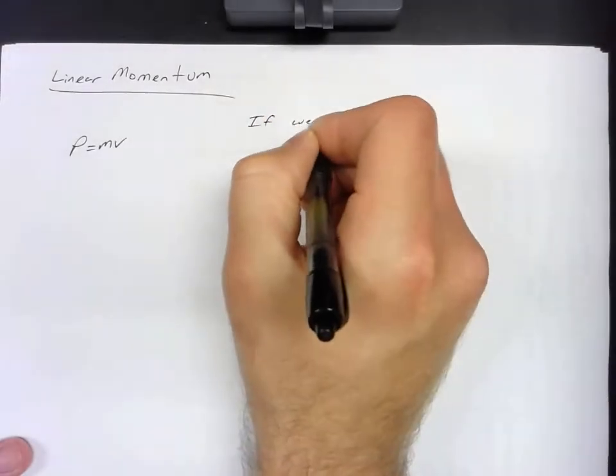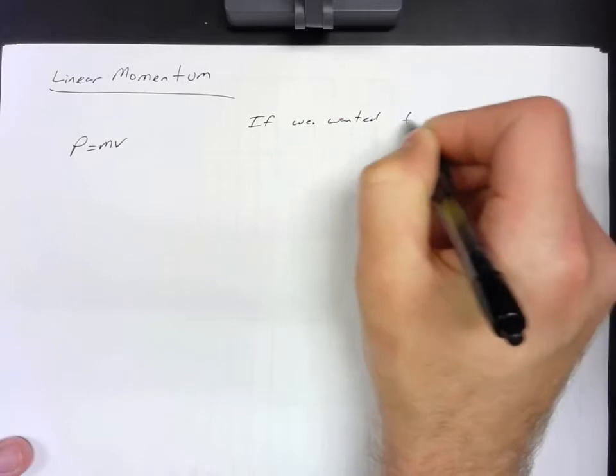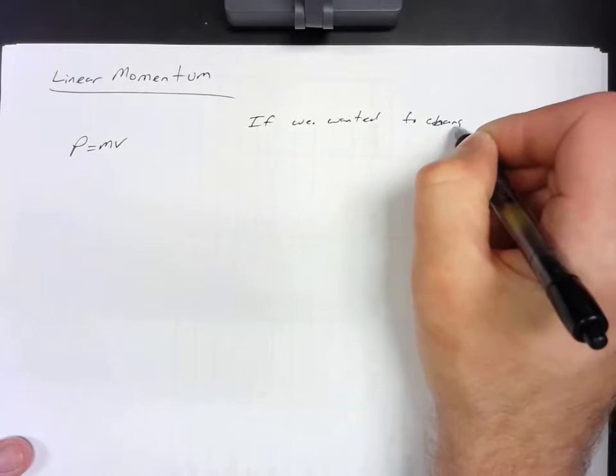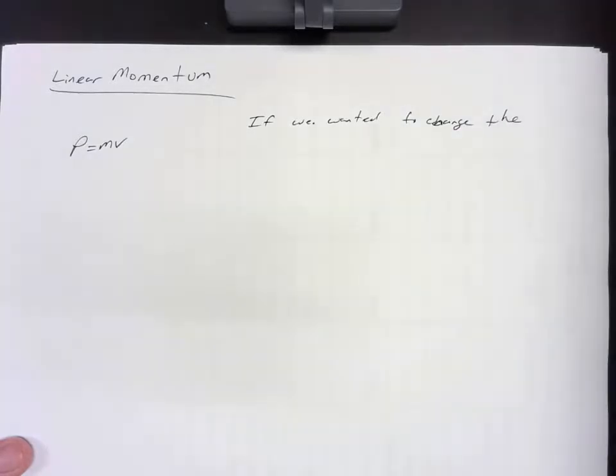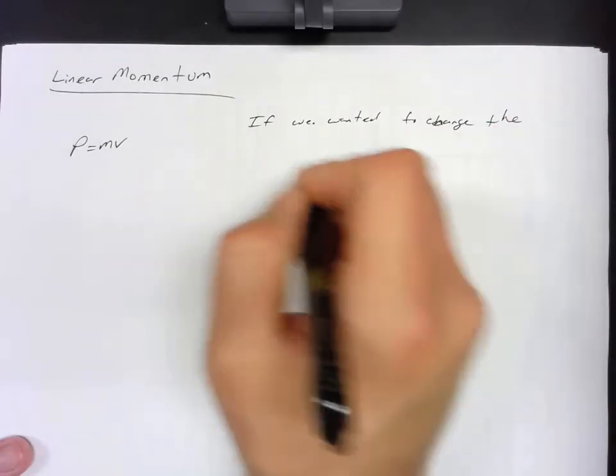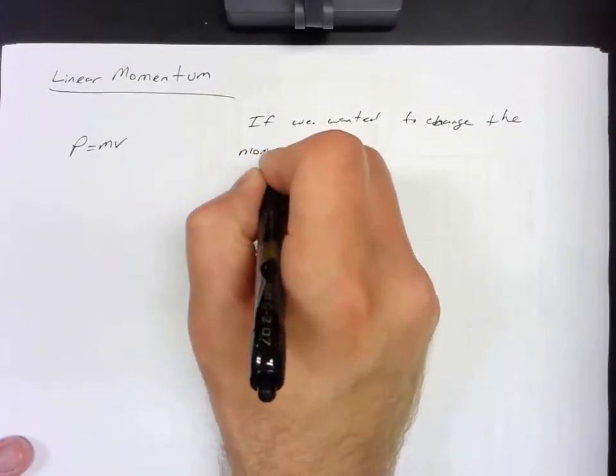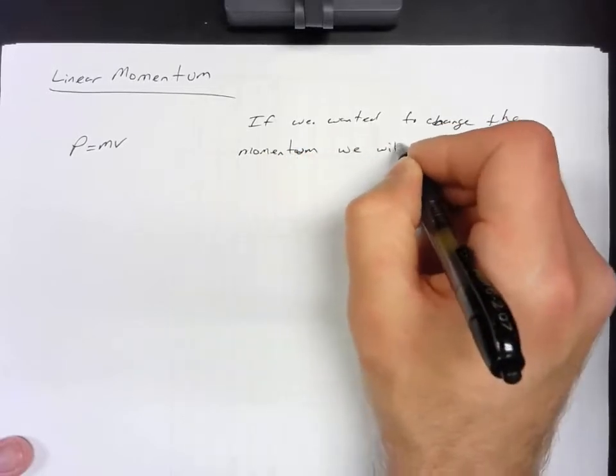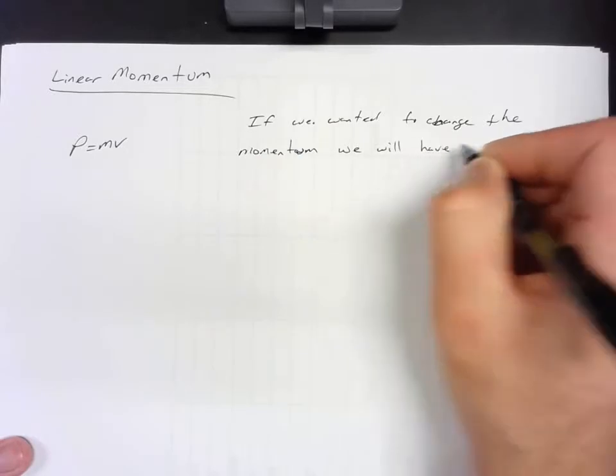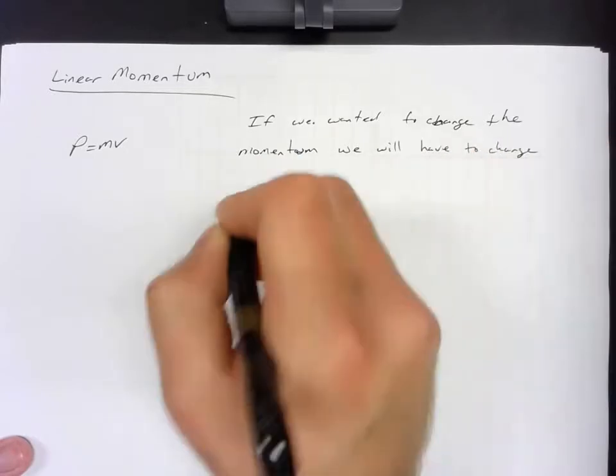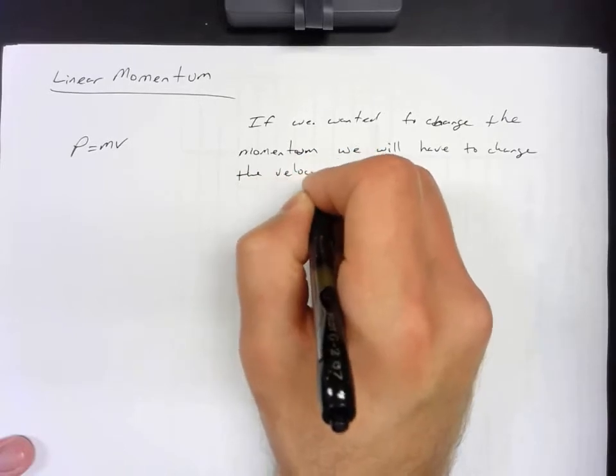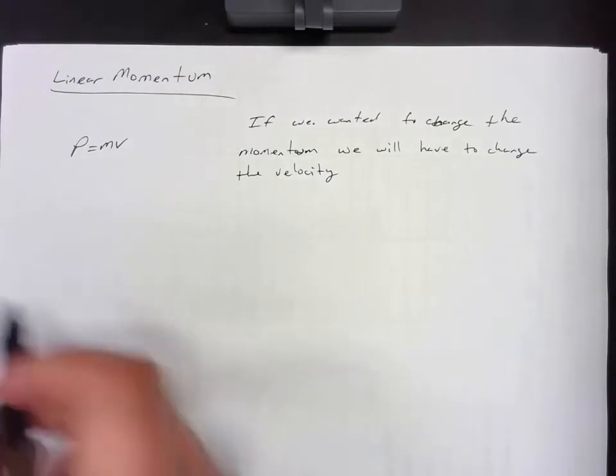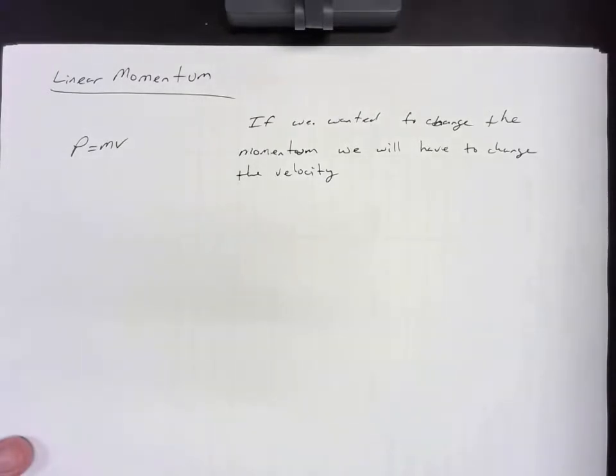And if we wanted to change the momentum, we would have to change the velocity. And we'll say that's for an object that is solid and we're not breaking it apart, so the mass will remain constant.